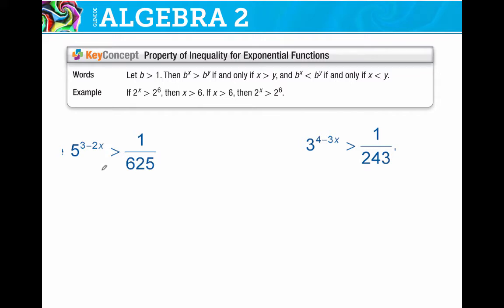Inequalities are going to be done the same way. You've got to watch out. If you multiply or divide by a negative, you've got to flip the sign. 625. Holy cow. What are we going to do? Well, 5 to the 1 is, or 5 squared is 25. 5 cubed is 125. 5 to the 4th is 625. So you can actually write this as 1 over 5 to the 4th. And then I can bring it up and make it 5 to the negative 4th. So really, my problem that I'm working is this.